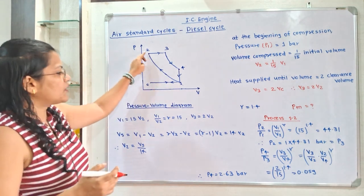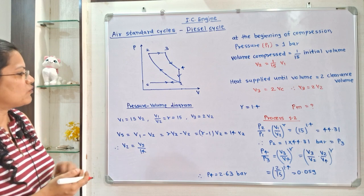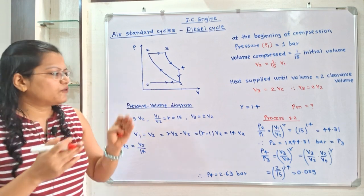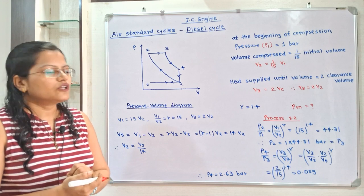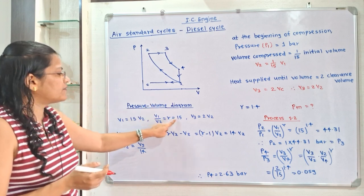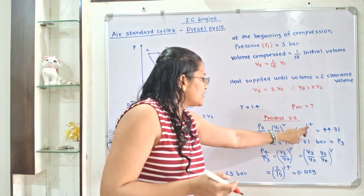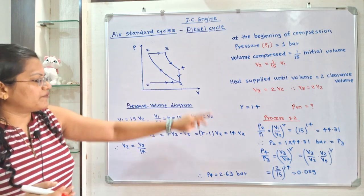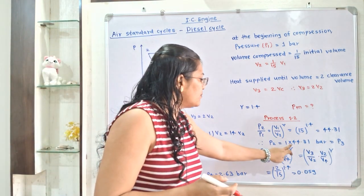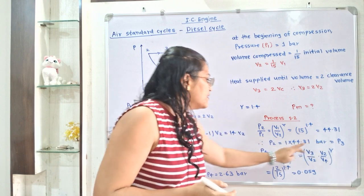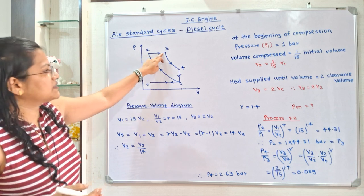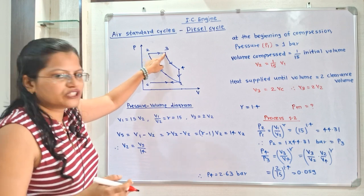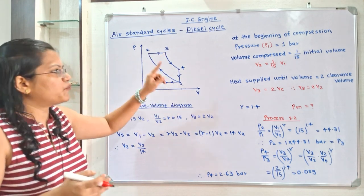Moving to process 1 to 2, we need to find the pressures. P2/P1 = (V1/V2)^γ. Since V1/V2 = 15, we get 15^1.4 = 44.31. So P2 = P1 × 44.31 = 1 × 44.31 = 44.31 bar. Also, P2 = P3 because process 2 to 3 is a constant pressure process. So we now know P1, P2, and P3.